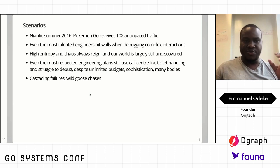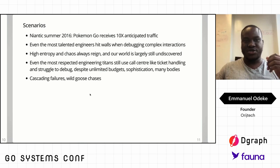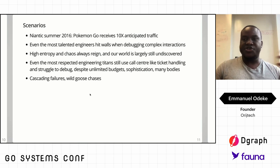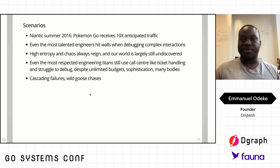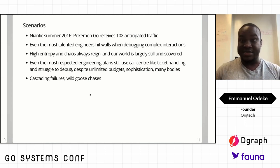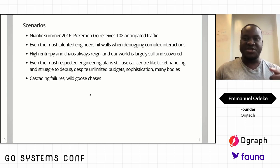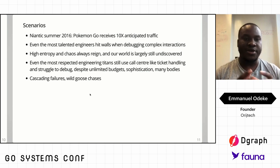Let me sweeten the deal a bit. Most of us are aware of Pokémon Go, made by Niantic in 2016. They planned for their launch and anticipated 5 million users. But the app went viral, and they got 15 million users — ten times the anticipated traffic. If you all remember, during that time, every time you'd load up their app, it would be crashing. We have to note that even the most talented engineers hit walls when debugging complex interactions.